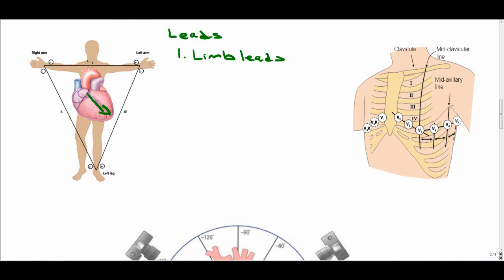We'll start with leads one, two, and three. Limb leads one, two, and three have negative and positive directions. Limb lead one is negative towards the right arm and positive towards the left arm. Limb lead two is negative towards the right arm and positive towards the left leg.